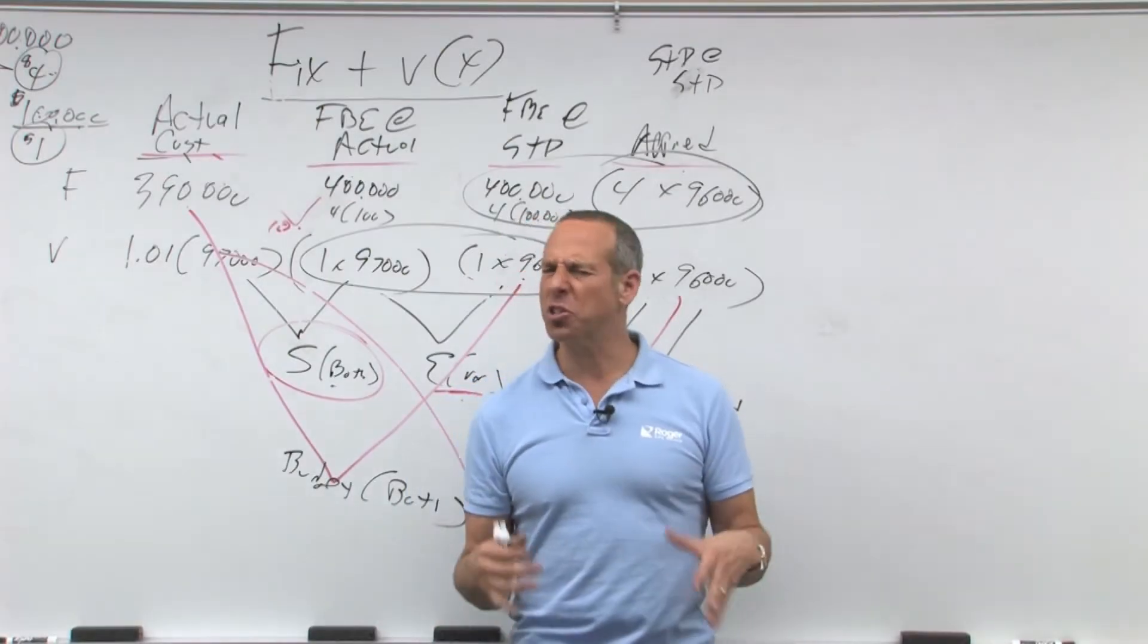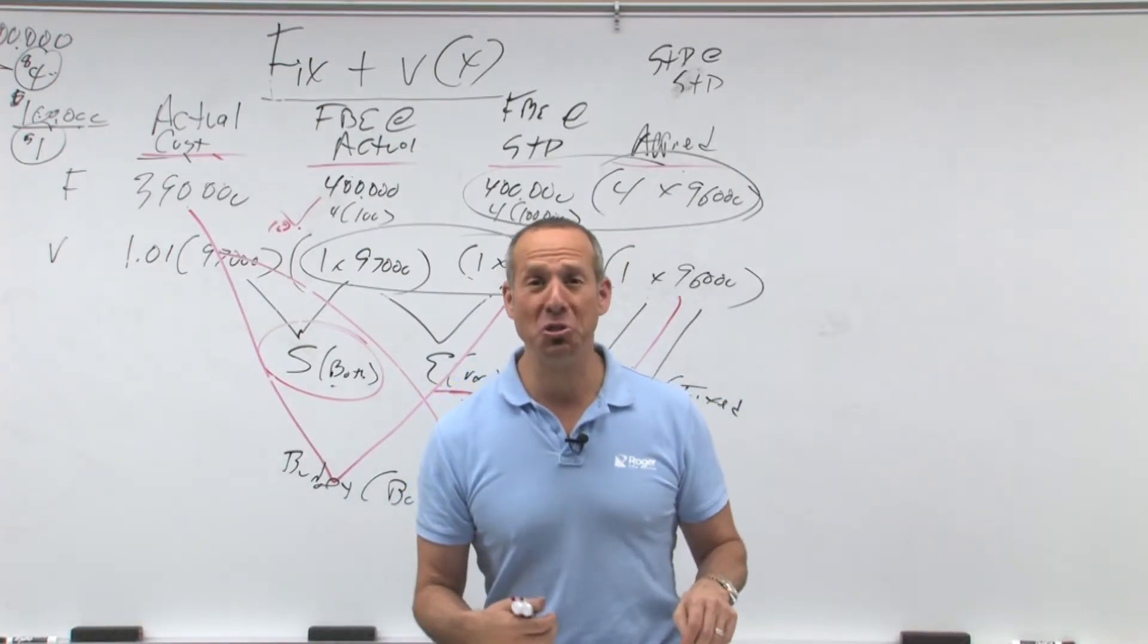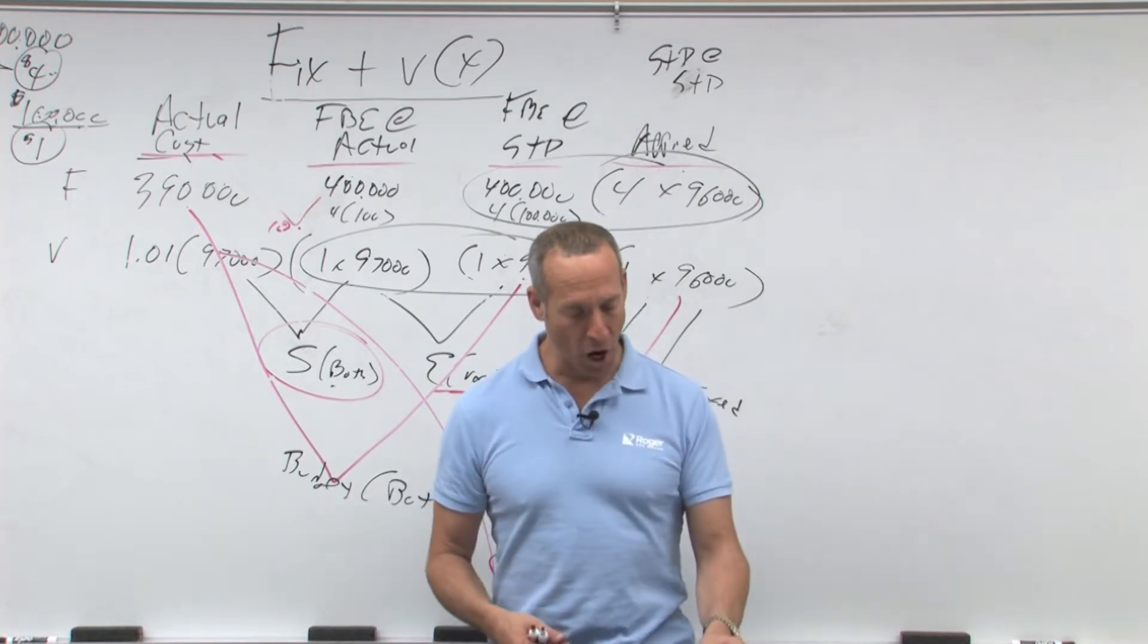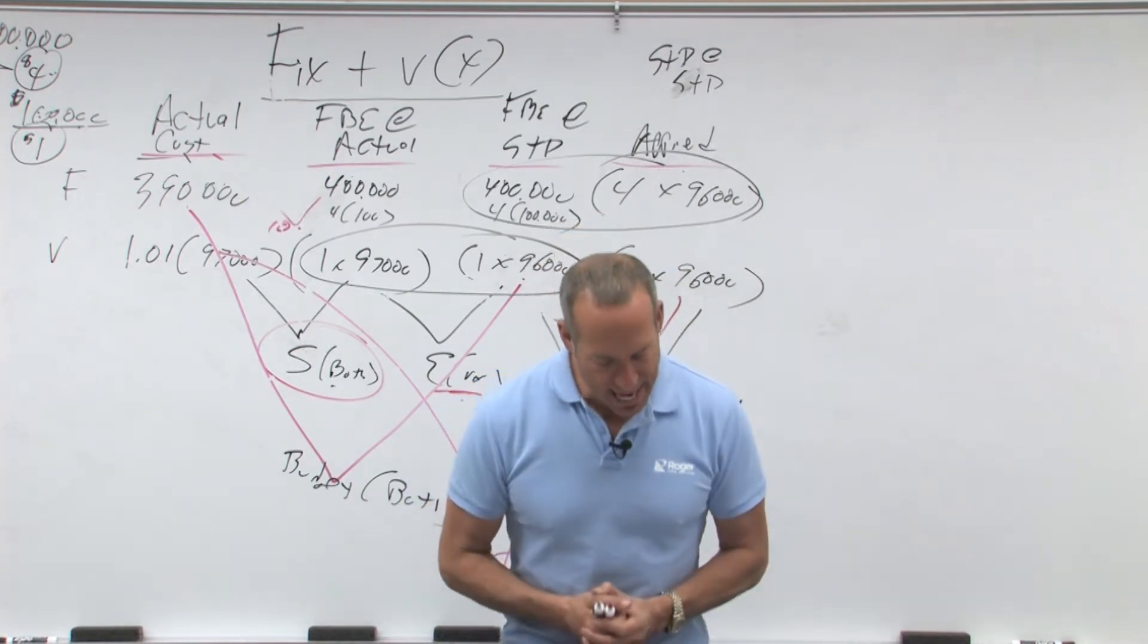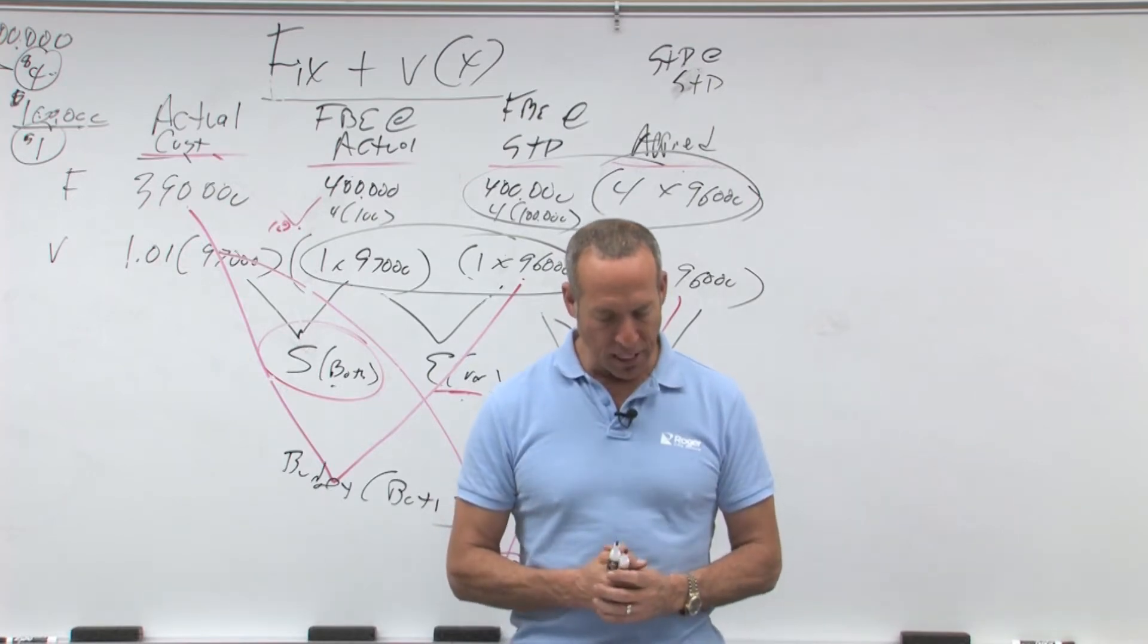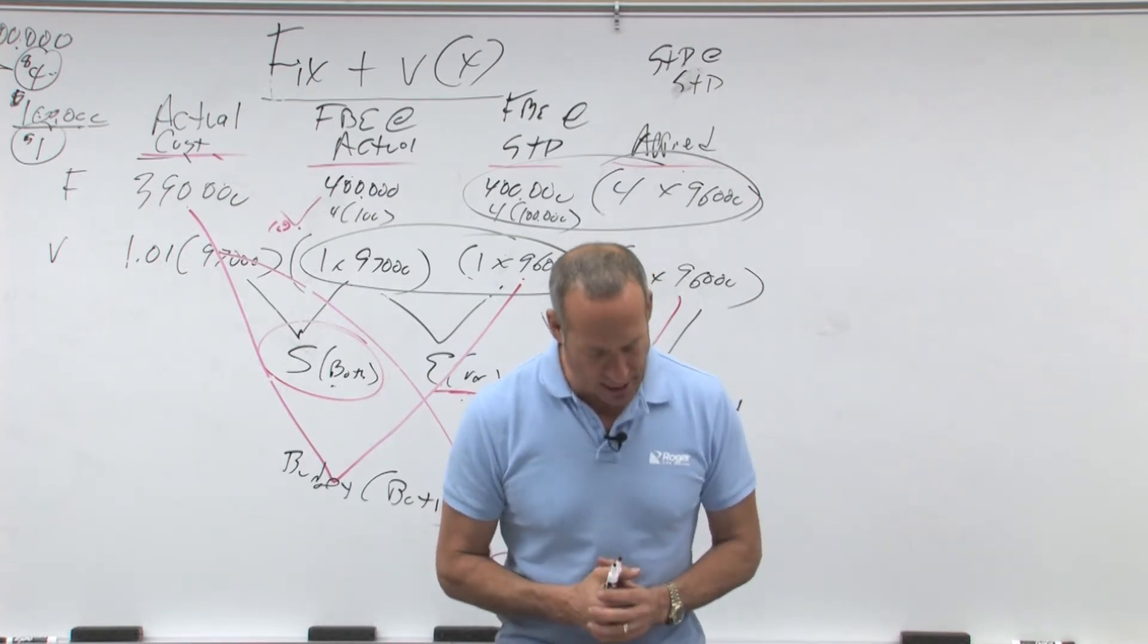Okay, let's now apply all this great stuff we just learned and do some variances. All right, question number three: which of the following standard costing variances would be least controllable by a production supervisor?